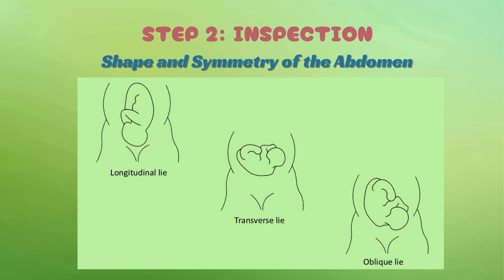Now let's start with inspection by simply looking at the abdomen. First, notice the shape and symmetry — normally the abdomen should be rounded and symmetrical. An asymmetrical bulge could suggest multi-fetal pregnancy, polyhydramnios, or fetal malposition. In the third trimester, the shape tells you about fetal lie: a vertically elongated abdomen suggests longitudinal lie, a wider-than-expected abdomen may indicate transverse lie, and a diagonal appearance could be oblique lie.